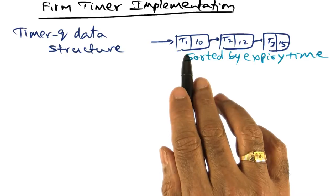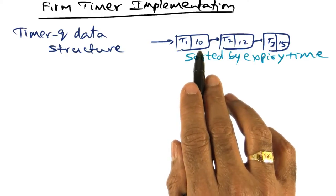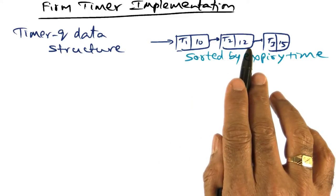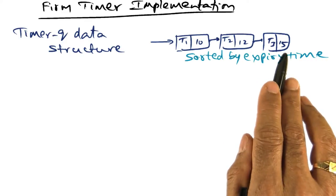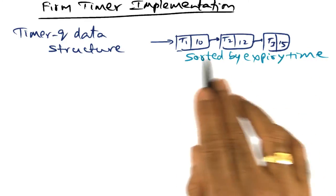Task T1 is the earliest task to go off because it has the earliest expiry time. T2 is next with an expiry time of 12, T3 with an expiry time of 15, and so on.